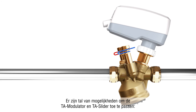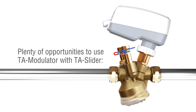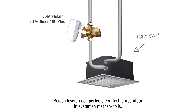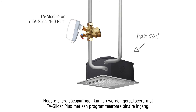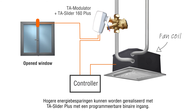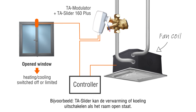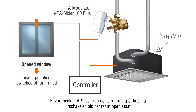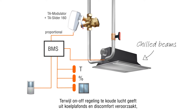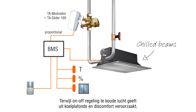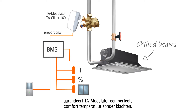There are plenty of opportunities to use TA Modulator with TA Slider. Both will deliver perfect temperature comfort in systems with fan coils. Higher energy savings can be achieved with TA Slider Plus, with programmable binary input — for example, TA Slider can switch off heating or cooling when the window is open. While on-off control delivers air that is too cold from chill beams and creates discomfort, TA Modulator guarantees perfect temperature comfort without complaints.